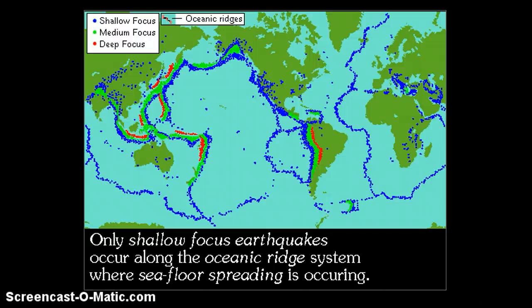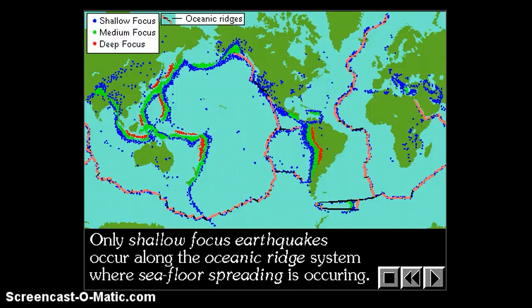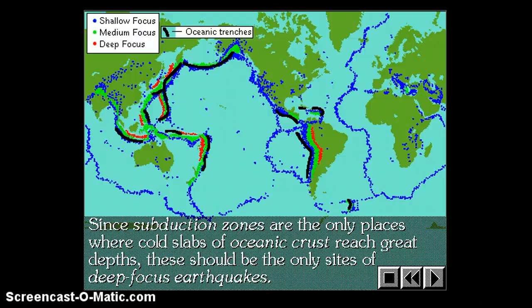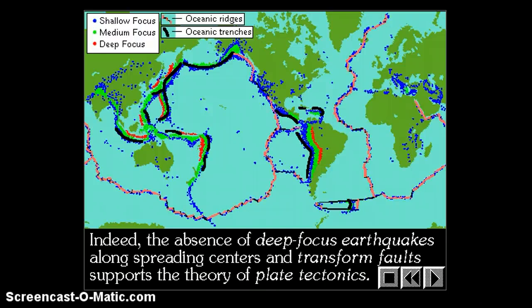This asthenosphere is gooey and soft, and no earthquakes are occurring in the asthenosphere, just as we would expect. The earthquakes are occurring in a cold, subducting plate that's being forced down into the asthenosphere. Eventually, it'll get to a depth at which it melts enough so that it will no longer be rigid enough to produce an earthquake. Typically, that's just a little bit shy of 700 kilometers deep. Only shallow focus earthquakes occur along the ocean ridge system where seafloor spreading is occurring. Since subduction zones are the only places where cold slabs of oceanic crust reach great depths, these should be the only sites of deep focus earthquakes. And indeed, that's exactly what we find. This is very good support for plate tectonics theory.